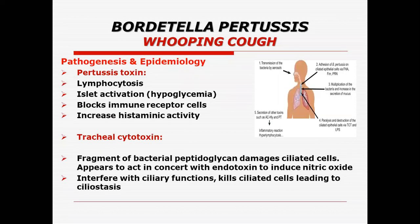The pertussis toxin causes lymphocytosis in the blood of the patient. The toxin inhibits some of the signals, resulting in the failure of lymphocytes to enter into lymphoid tissues, particularly the spleen and lymph nodes. Because the lymphocytes cannot go into lymphoid tissues, they increase in numbers in the blood vessels, which is what we call leukocytosis and lymphocytosis.